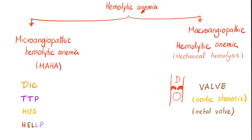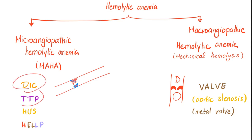In my hematology playlist, we have talked about hemolytic anemias before. We have microangiopathic hemolytic anemia and macroangiopathic hemolytic anemia. Microangiopathic hemolytic anemia — the name is micro-angio, so small blood vessels. Some platelets form a microthrombus, and then fibrin fibers trap the red blood cells. You see this in DIC, TTP, HUS, and HELLP syndrome, although there are some differences.